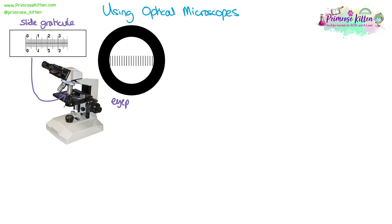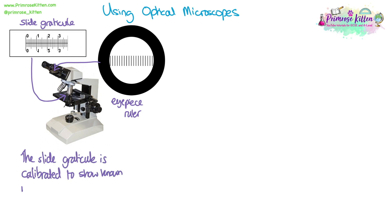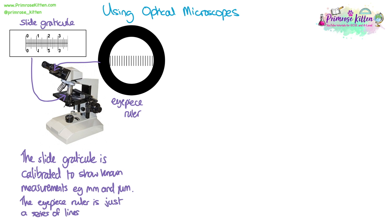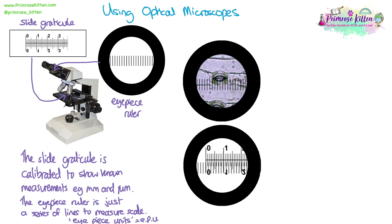There are two pieces of equipment we can use to measure structures in a microscope. The slide graticule is a lined ruler on a microscope slide that you place on the stage. The eyepiece ruler is a ruler imprinted on the lens in the eyepiece. The slide graticule has calibrated measurements including millimetres and micrometres, while the eyepiece ruler is a series of lines scratched or laid onto the eyepiece lens, allowing you to count the length of an object in eyepiece units, or EPU for short.